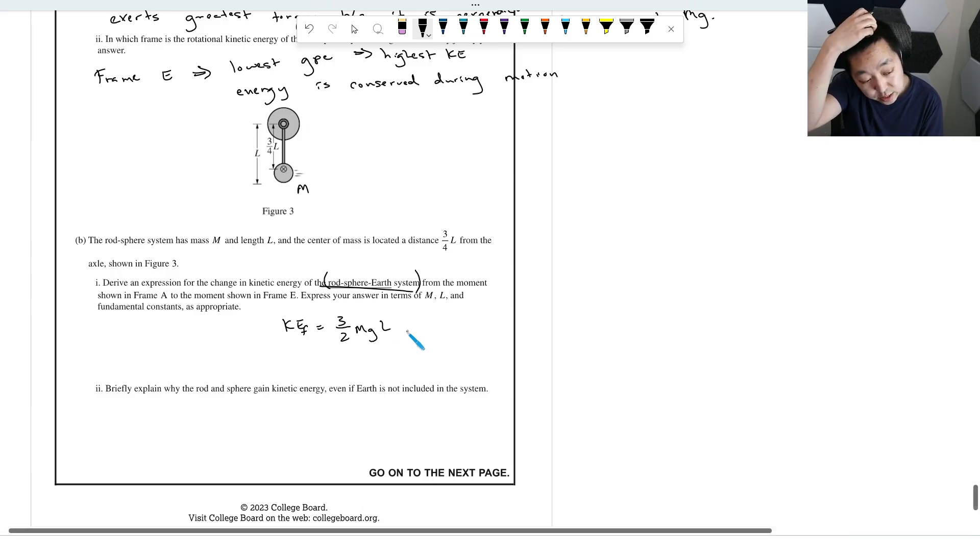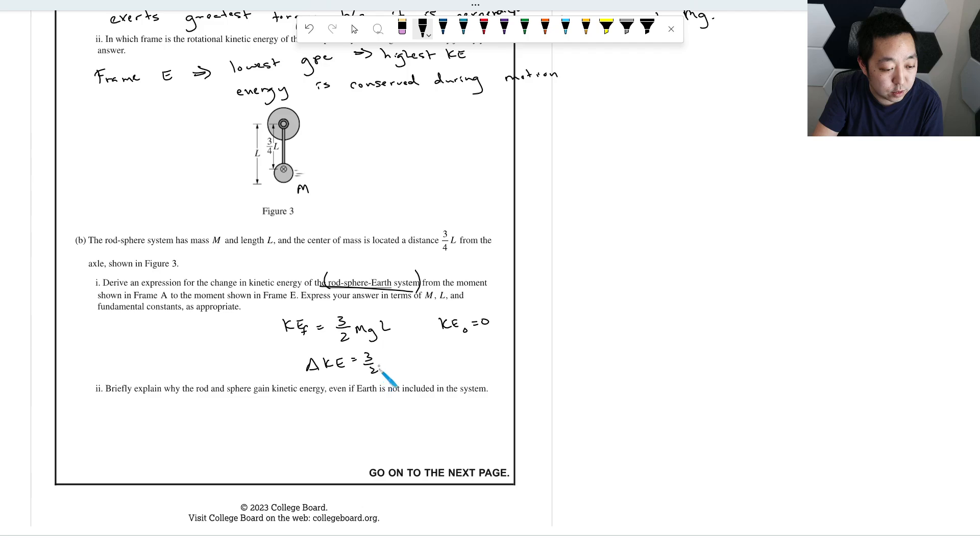So the kinetic energy at the bottom is going to equal this quantity we got here, which is three-halves MGL. Okay, and that is the change because the initial kinetic energy is zero, so the change in kinetic energy is going to be equal to three-halves MGL, minus zero, or just three-halves MGL.